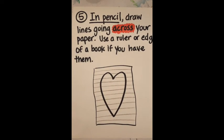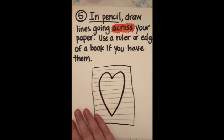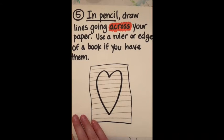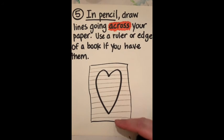Then we're going to switch back to pencil. Put that dark color away and grab a pencil. You are going to draw lines going across your paper. Use a ruler or edge of a book if you have one; if not, you can just draw them freehand. These are actually called horizontal lines—they go from left to right. I'm going to go all the way down until I fill up the paper.